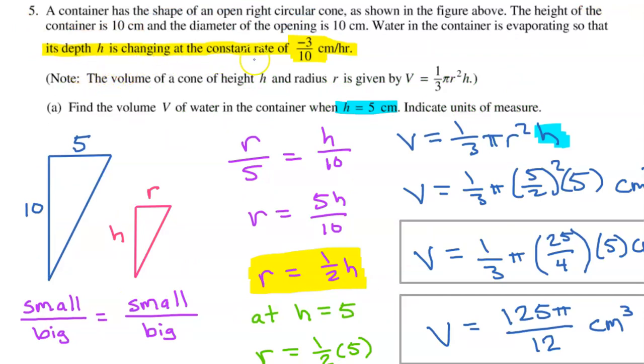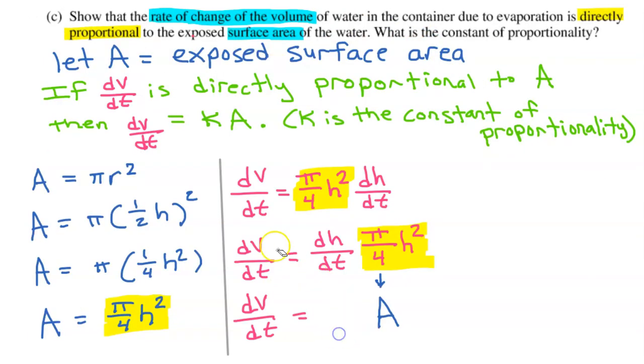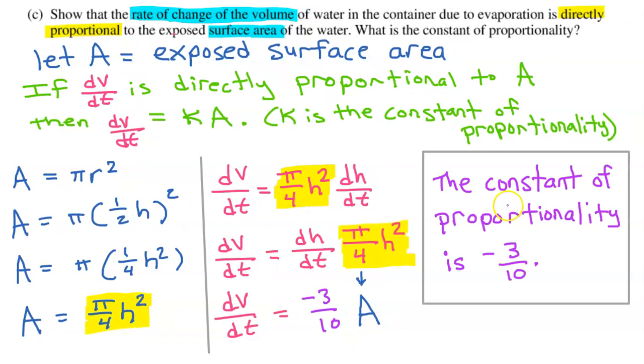Don't forget that back in the original setup of the problem, we're told that the depth h is changing at a constant rate of negative 3 over 10 centimeters per hour. This is dh/dt. So I can simply replace the expression dh/dt with negative 3 over 10. So I have now shown that dV/dt is directly proportional to a by writing it as something times a. Negative 3 over 10 times a. And that k value is negative 3 over 10. So in summary, we write the constant of proportionality is negative 3 over 10.